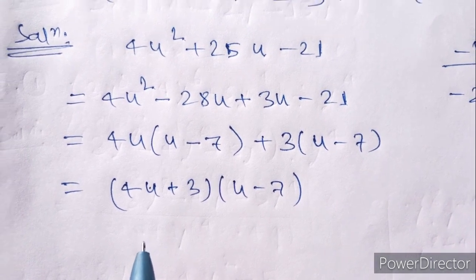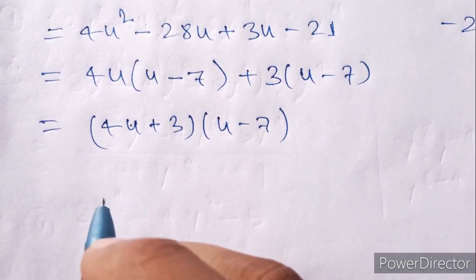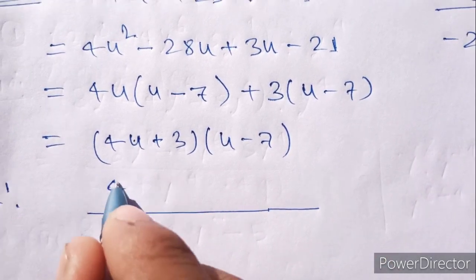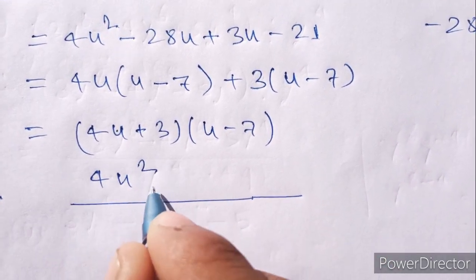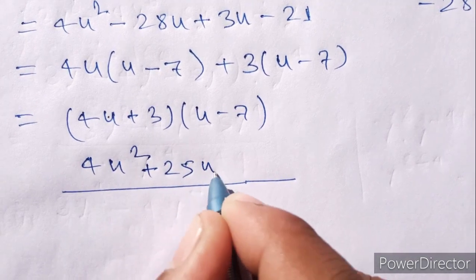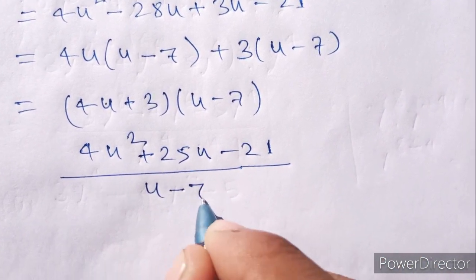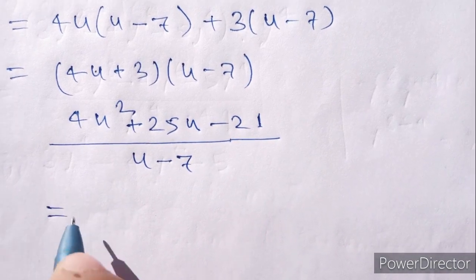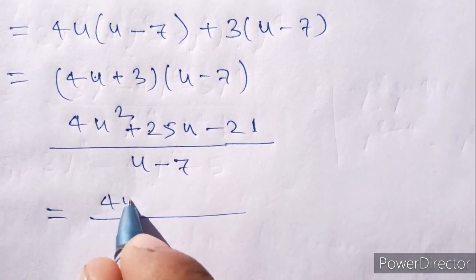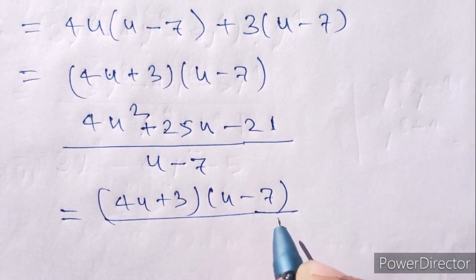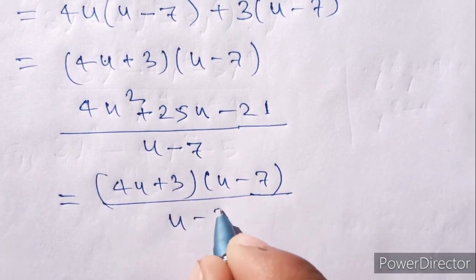So the final answer: 4u² plus 25u minus 21 divided by u minus 7 equals 4u plus 3.